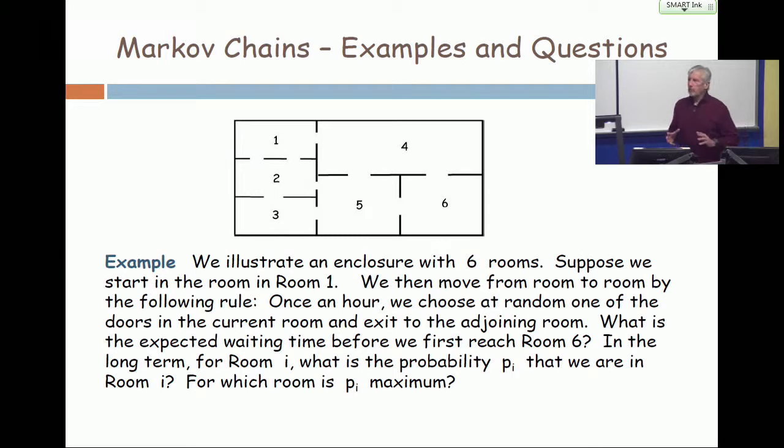So a Markov chain is a process that has these qualities that there's a finite number of states, rooms, and you move from one room to another room at any given time, and the probabilities of how you move are independent of time.